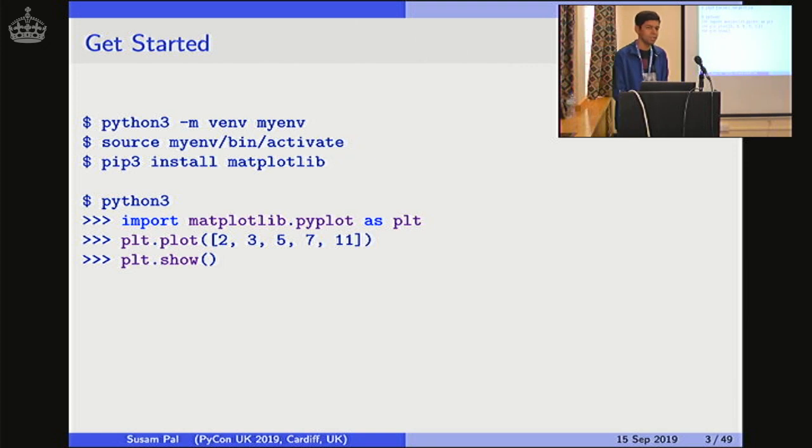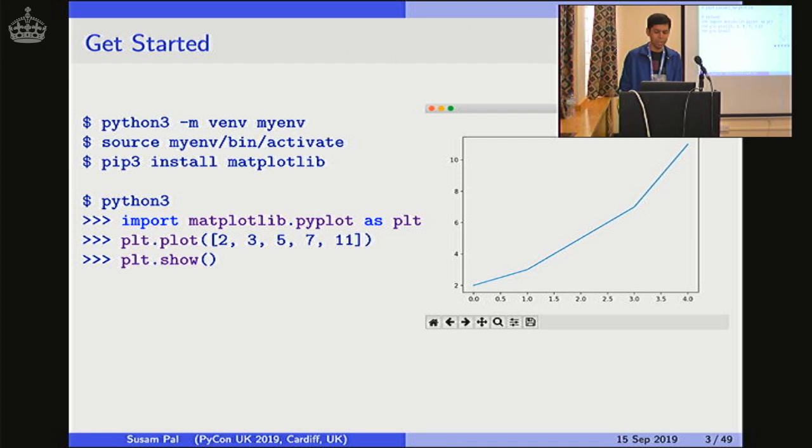Once it is installed, it is quite easy to test it out. Just launch the Python interpreter. Import matplotlib.pyplot as plt. That's just a very popular convention that is used in the Matplotlib community. Then call the plot function, give it a list of numbers to plot. And finally call the show function. As soon as you execute the show function, something like this should pop up on your desktop. And this shows that Matplotlib is working fine.